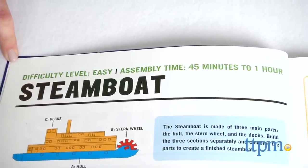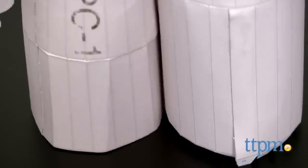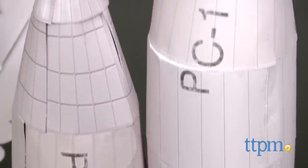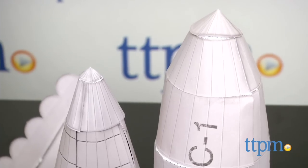Each instruction page tells you the model's difficulty level and expected assembly time, so you can choose which model you want to do based on skill level and how much time you have to craft.